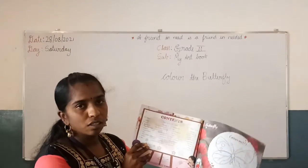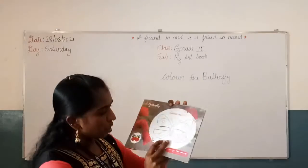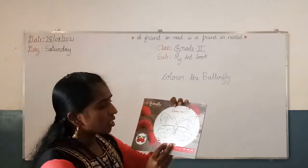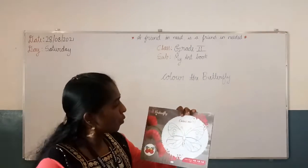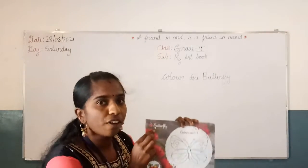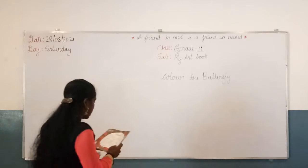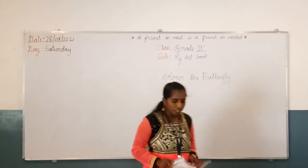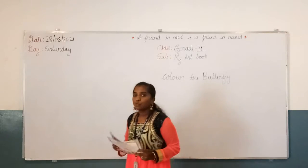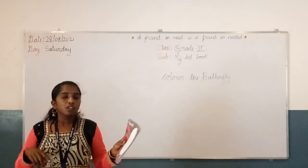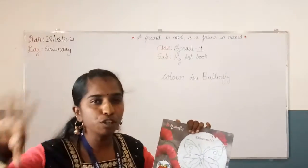Here I have the contents. Ok children, and on the first page, what is the picture? It is a butterfly. Ok children, what is the name here? Butterfly. Color me. Yes children, in this page you have to color the butterfly. Take your crayons and color the colorful butterfly.